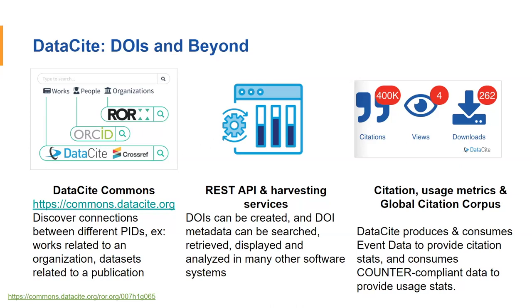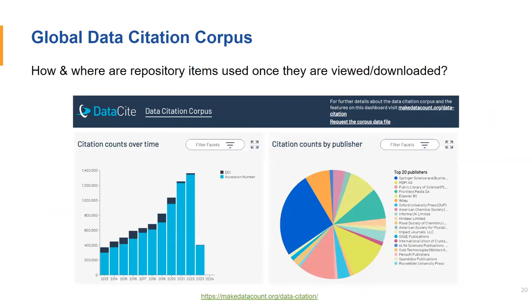DataSite also has an API. DataSite metadata is open and gets harvested and indexed into many different services. They're also looking at metrics like citations, views, and downloads. I want to draw attention to a recent undertaking led by DataSite called the Global Data Citation Corpus — a grant-funded project to get a better understanding of where and how data sets are being used and cited. This is really exciting because in addition to just usage stats like views and downloads, it will enable us to have a better idea of how and where items like data sets are being used once they're reviewed and downloaded.